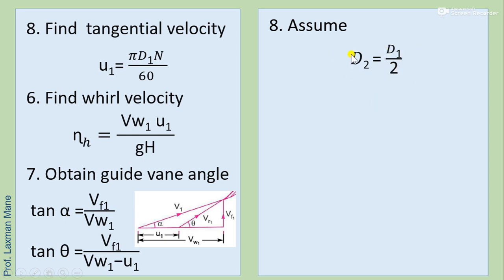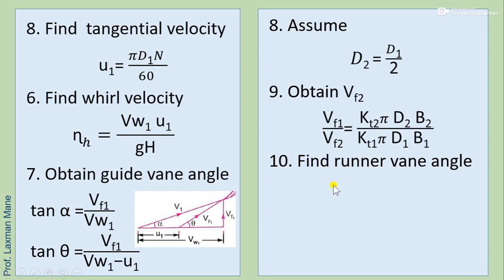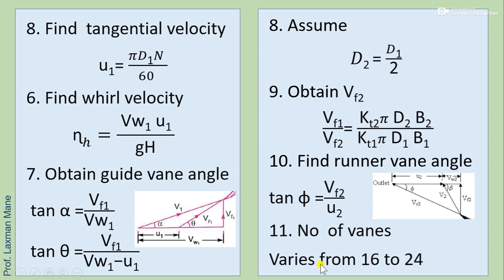Assume D2 = D1/2. Find tangential velocity using the speed ratio formula. Find whirl velocity using the hydraulic efficiency formula. From the inlet velocity triangle, find guide vane angle alpha and runner vane angle theta. From the outlet velocity triangle, find vane angle phi using tan ratios. The number of vanes is taken in the range of 16 to 24.